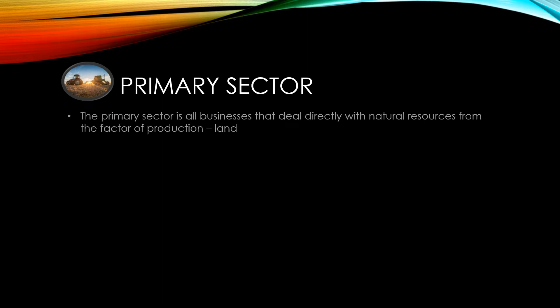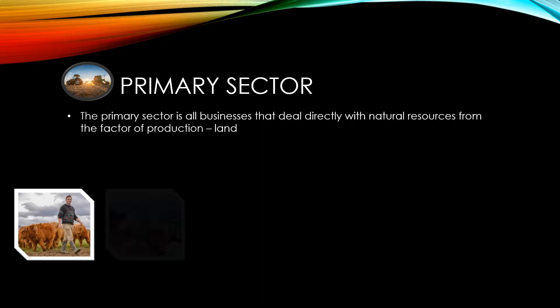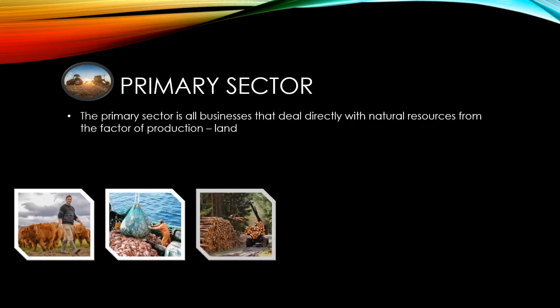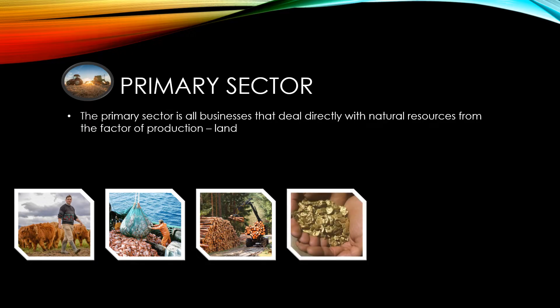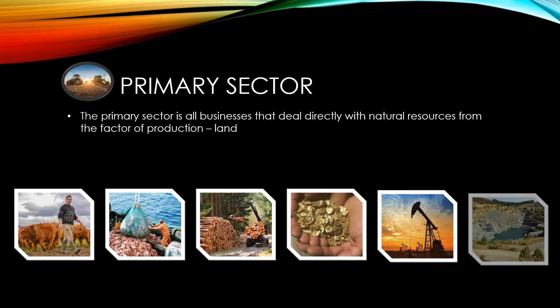The primary sector is made up of all those businesses that deal directly with natural resources — that is, the things that come from the factor of production known as land. This includes agriculture, fishing, forestry, mining, oil and gas extraction, and quarrying.